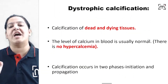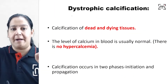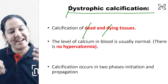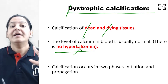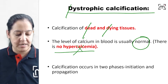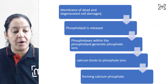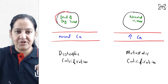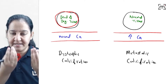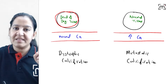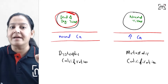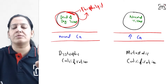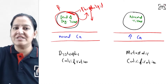Now let's discuss dystrophic calcification in detail. It occurs in dead and degenerated tissue, and there is no hypercalcemia — calcium levels in the blood are normal. What is the pathogenesis? When a cell is dead, it bursts out — it is necrotic. The cell membrane contains phospholipid. When the cell is dead and degenerated and bursts out, an enzyme called phospholipase acts on this phospholipid.